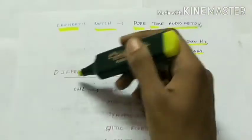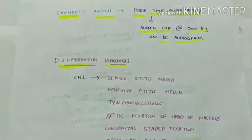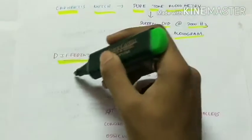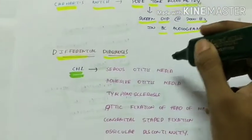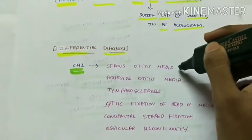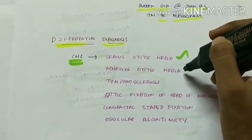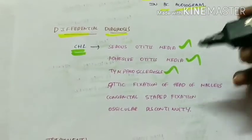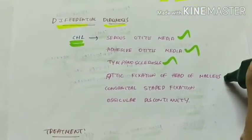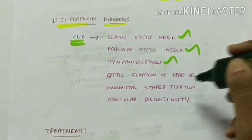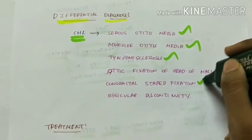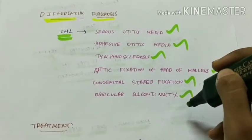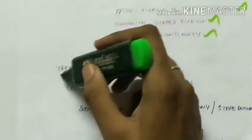The differential diagnosis for otosclerosis — which presents with conductive hearing loss — includes serous otitis media, adhesive otitis media, tympanosclerosis, attic fixation of the head of malleus, congenital stapes fixation, and ossicular discontinuity.